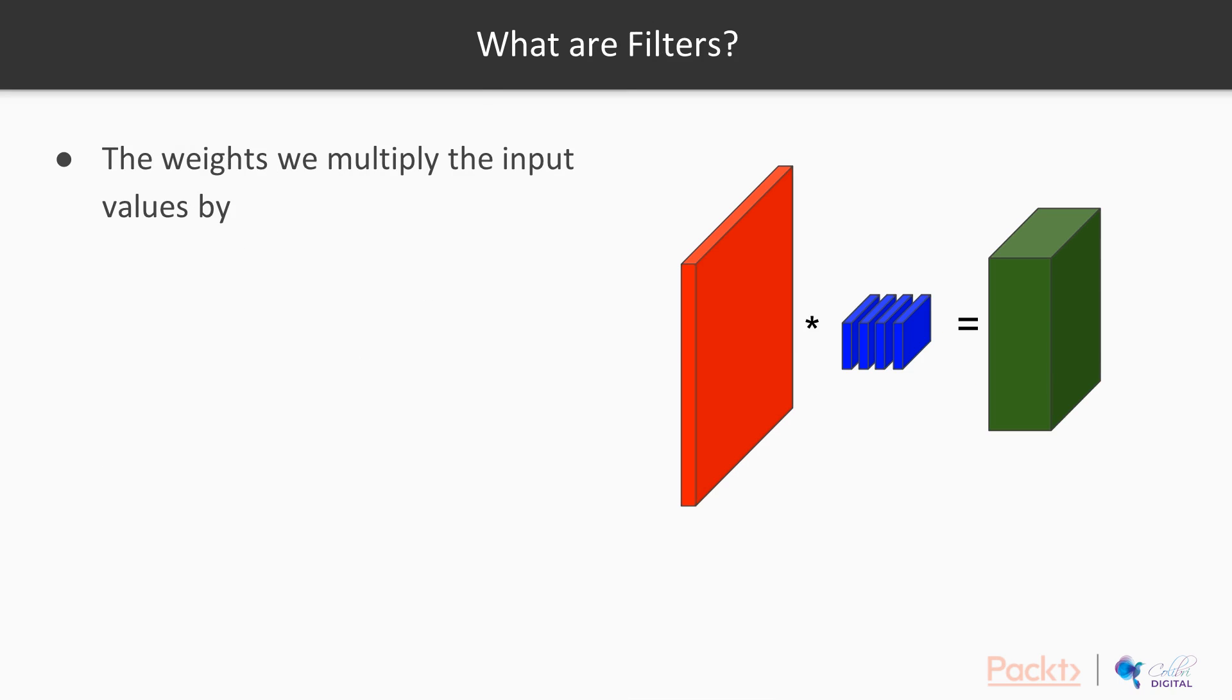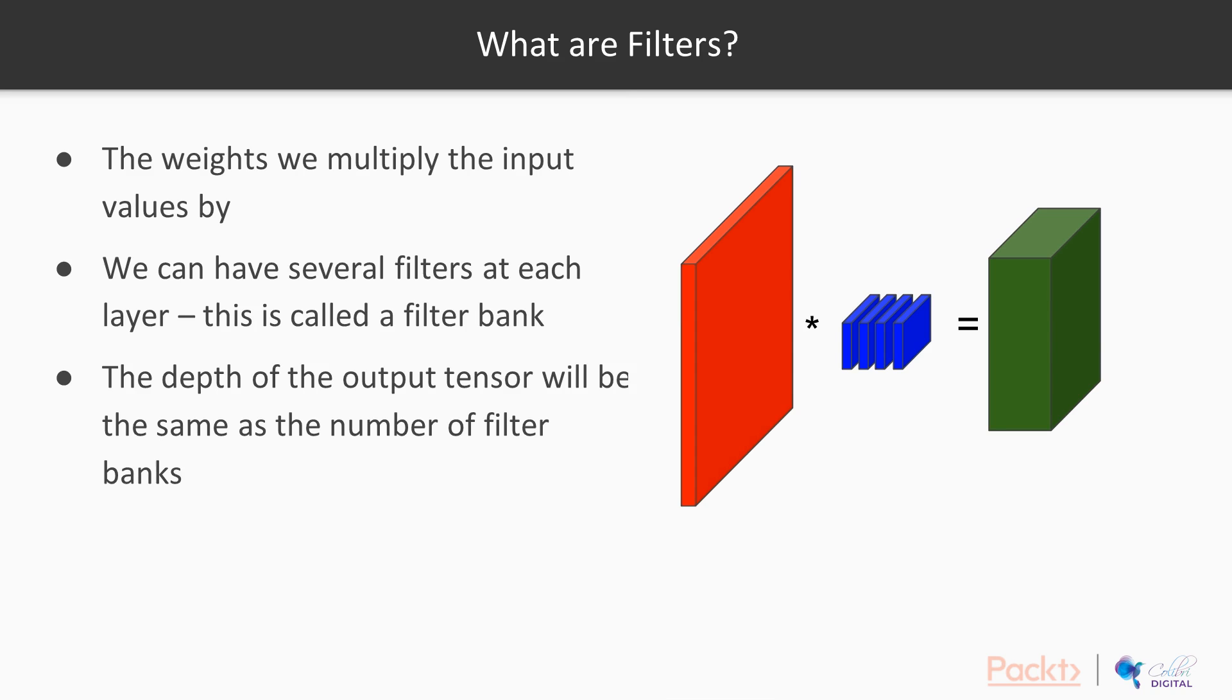So what are filters? Filters are effectively the weights that we learn for the algorithm, and then what we multiply the input values by. We can have several filters at each layer, and this is called a filter bank. Imagine this is something like a three by three filter. We'll start up here at the three by three image values, then multiply them, sum them, and we'll put a little value there. Similarly with this filter, the second one. We'll multiply up by here and that will represent that row, and so on and so on.